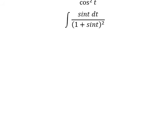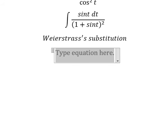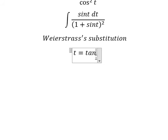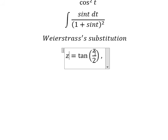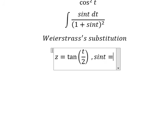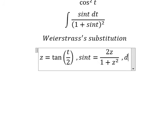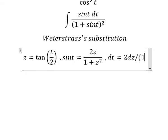Now let's go to the next step. We can use the Weierstrass substitution. I will put z equal to tan(t/2). So with this substitution, we have sin(t) equals two·z over one plus z².